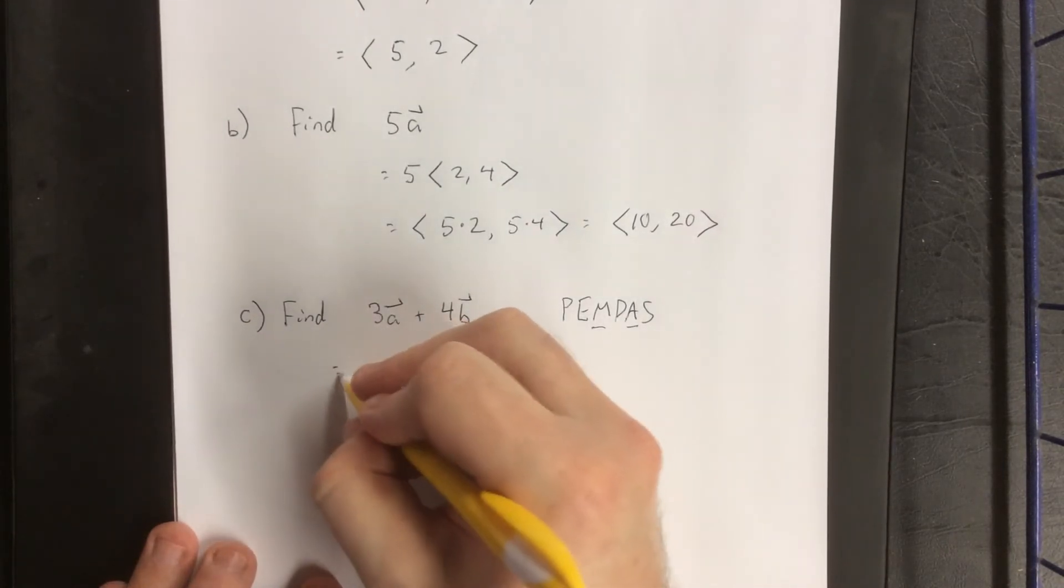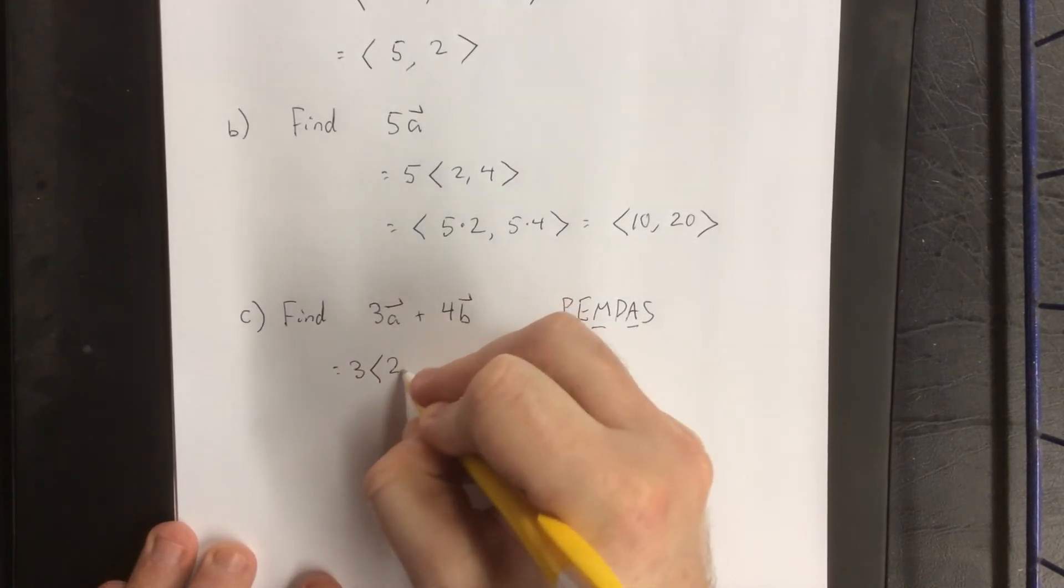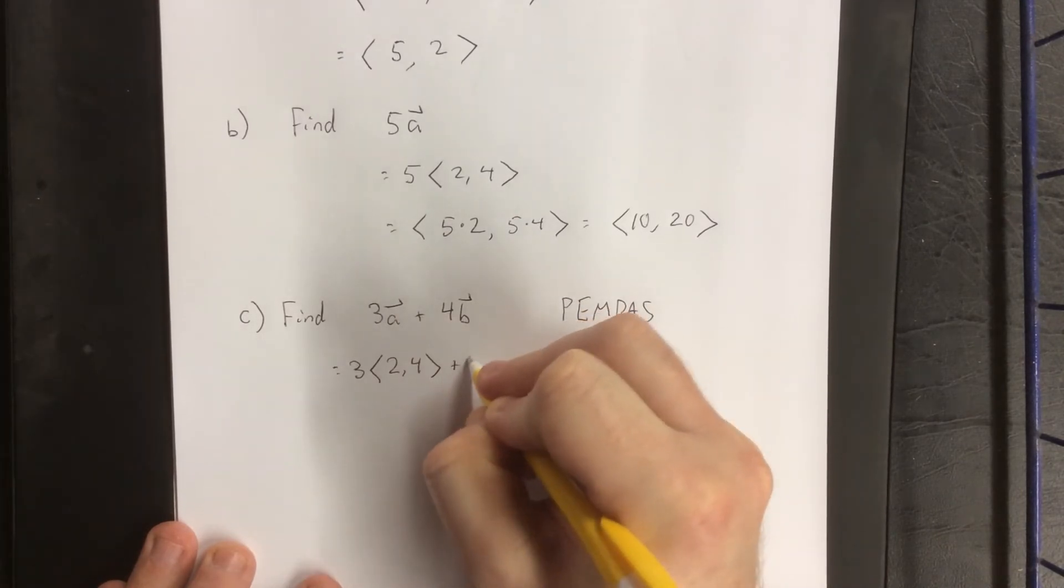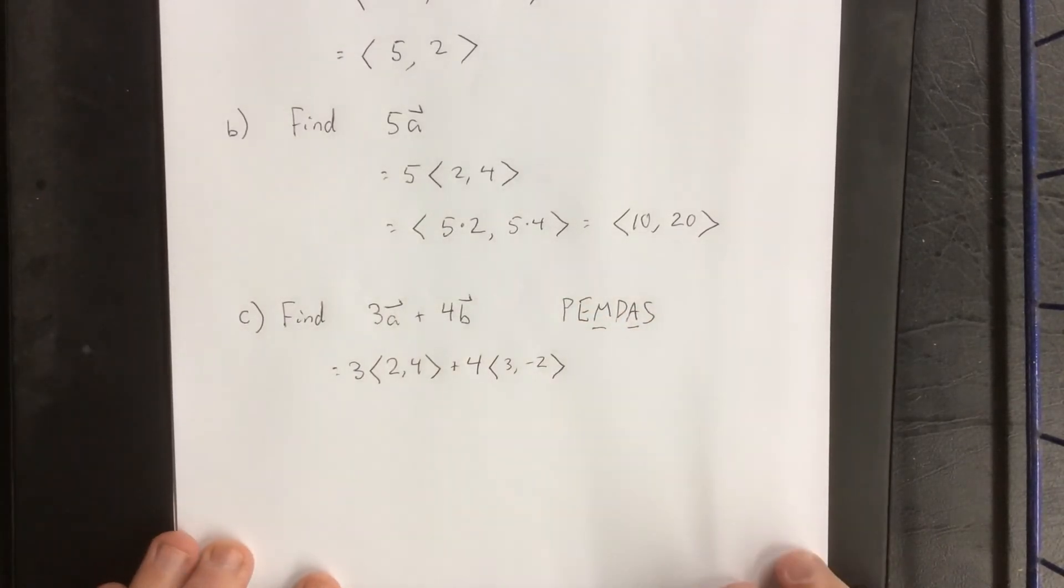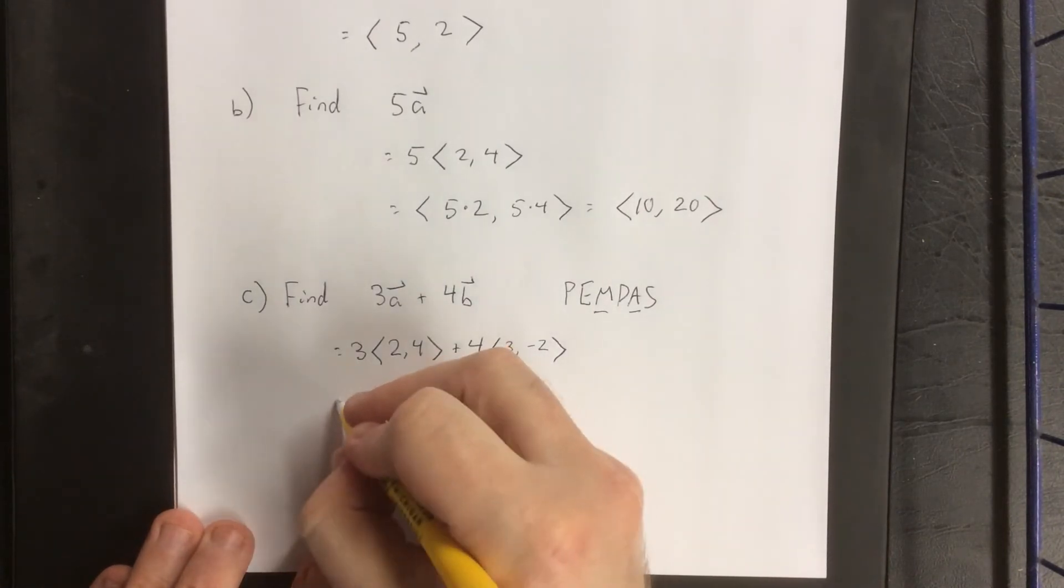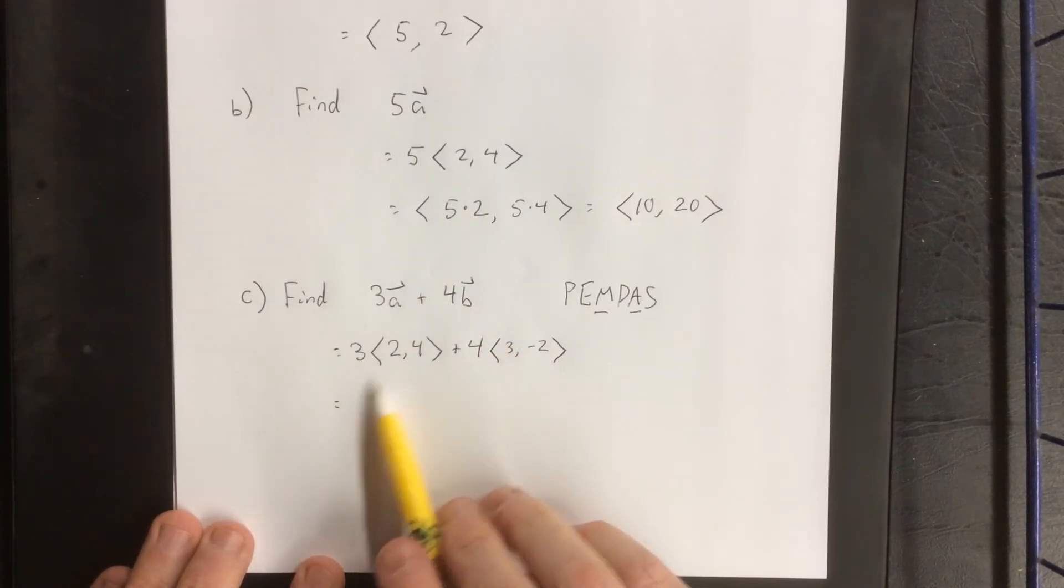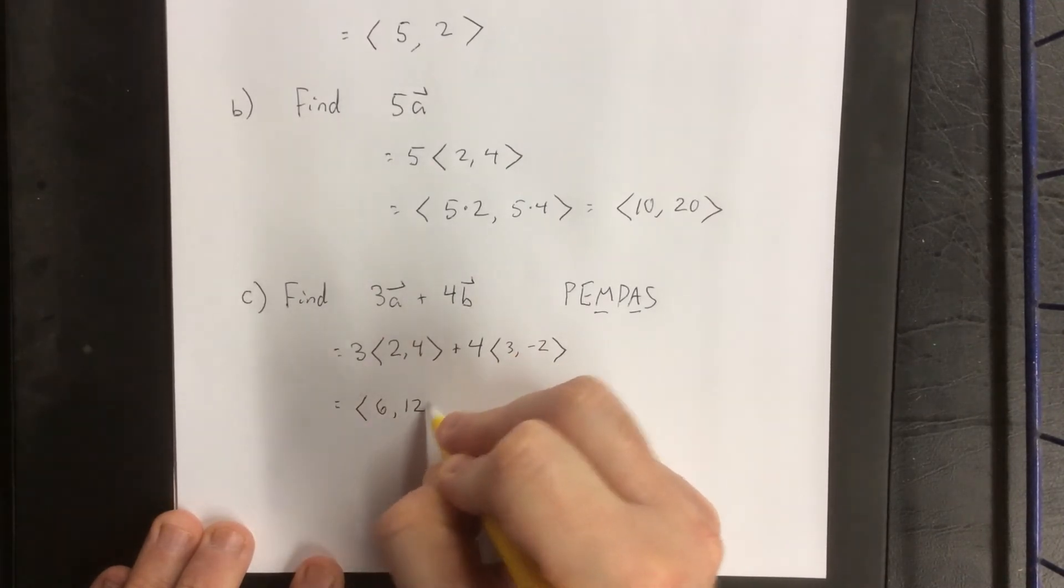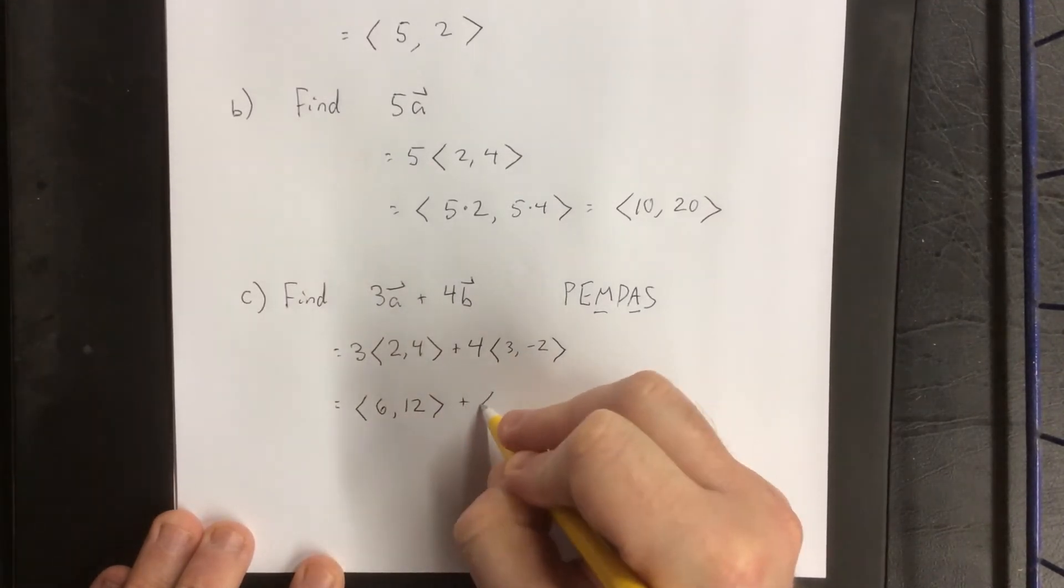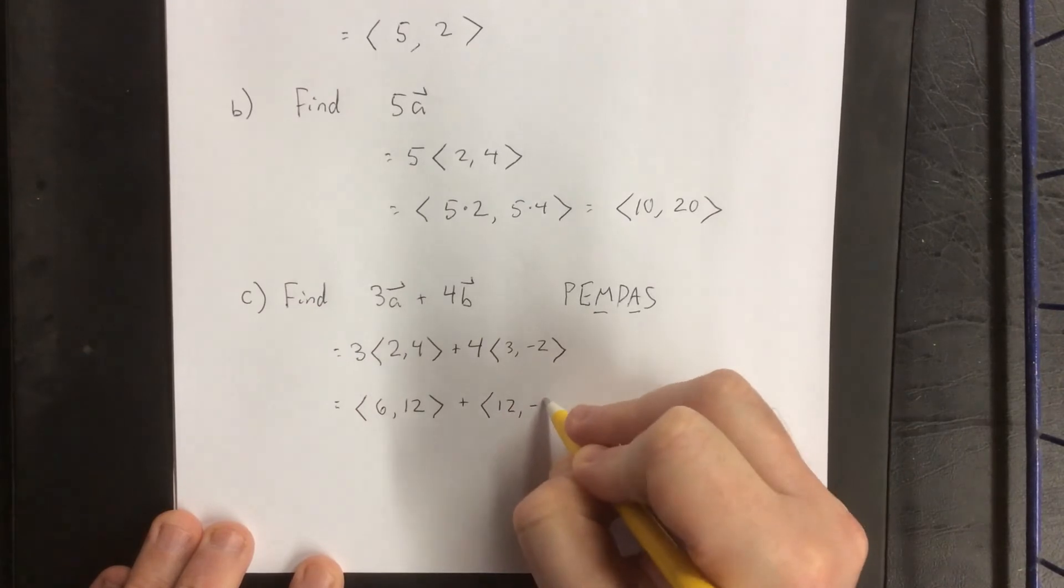So with that in mind, if we have 3 times the vector A, which is <2, 4>, plus 4 times the vector <3, -2>, we perform our multiplication first. We distribute the 3 through to each component. Each component will become <6, 12>, and distribute the 4 as well. That'll become <12, -8>.